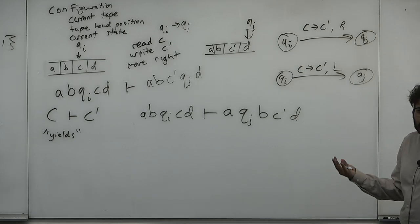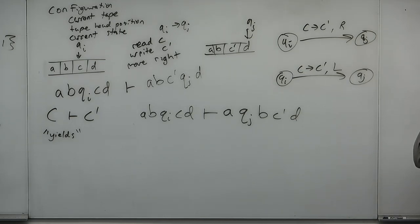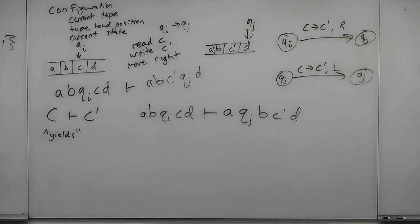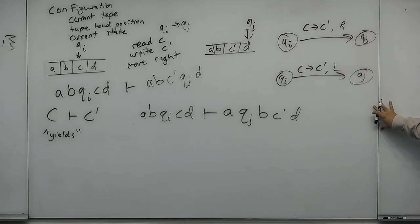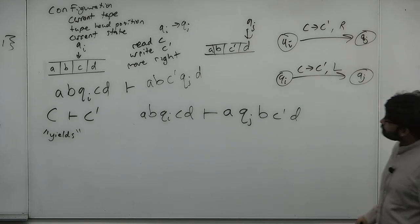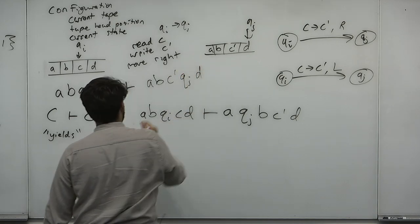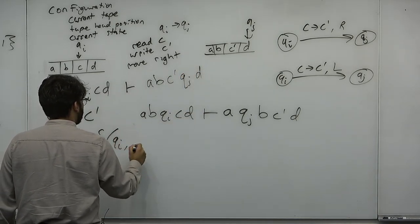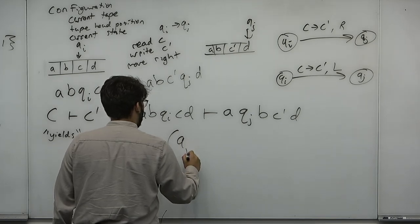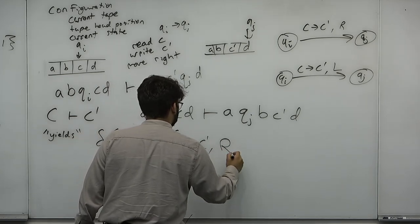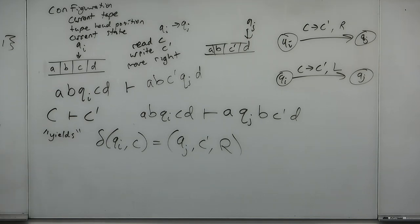In function notation: delta(QI, C) = (QJ, C', right). It's state and symbol in, and state, symbol to write, and direction out. These are the configurations of a Turing machine.